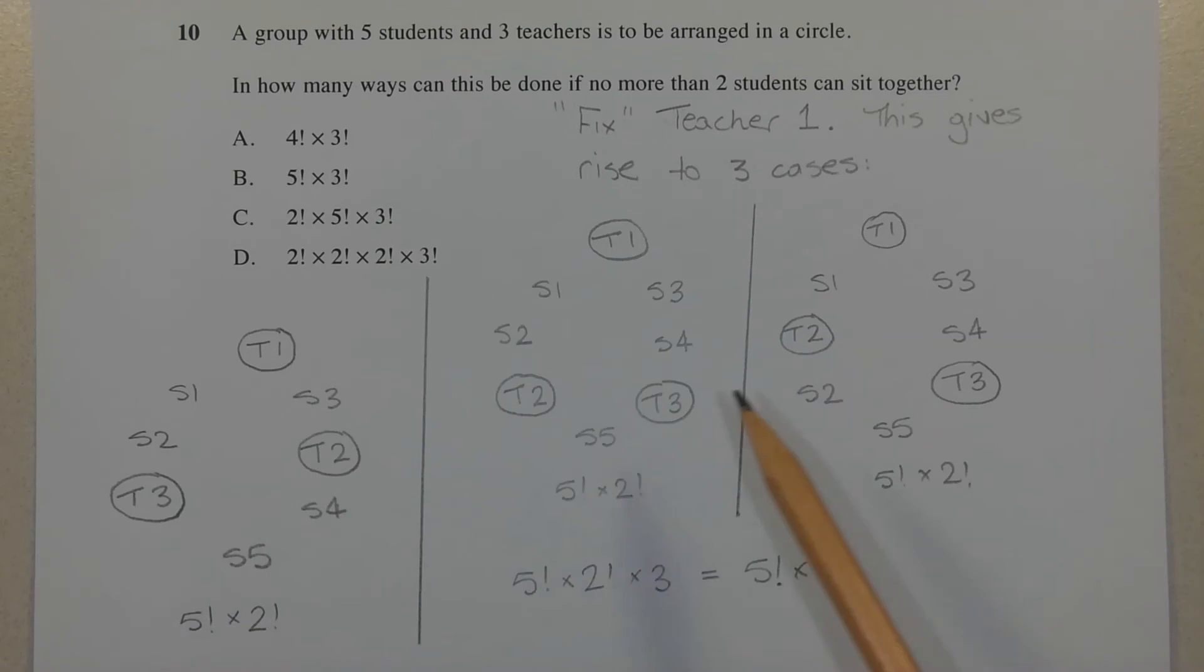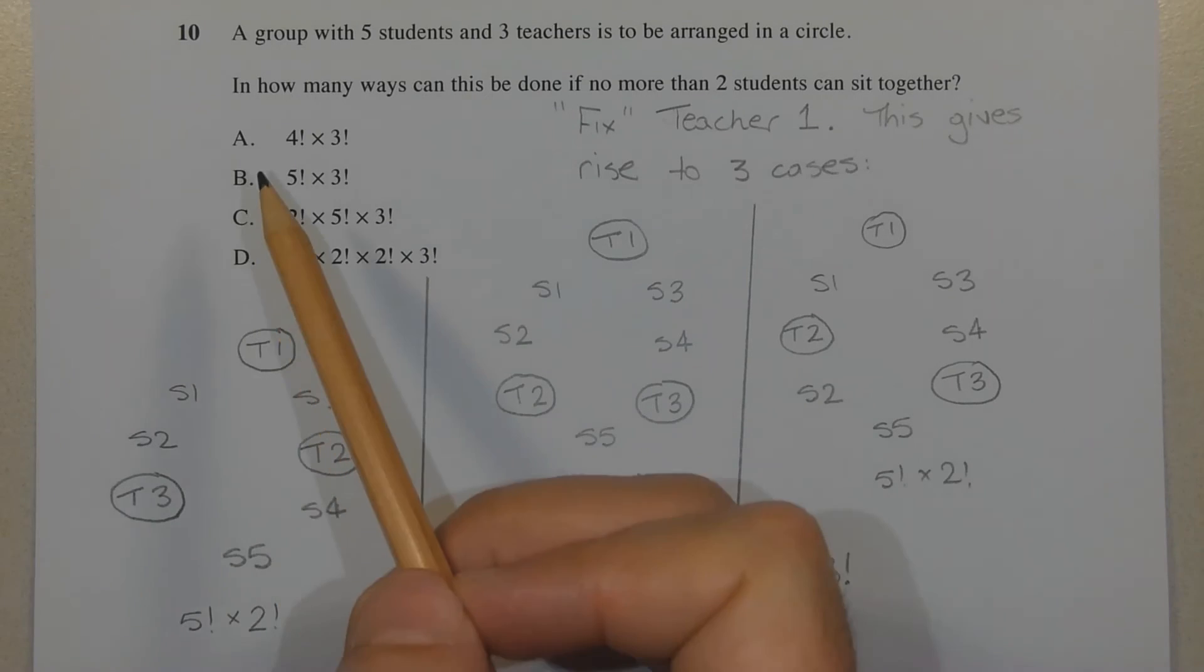So the total number of arrangements is given by 5 factorial times 2 factorial times the three cases. And 2 factorial times 3 simplifies to 3 factorial. So 5 factorial times 2 factorial times 3 simplifies to 5 factorial times 3 factorial. Therefore the correct answer is option B.